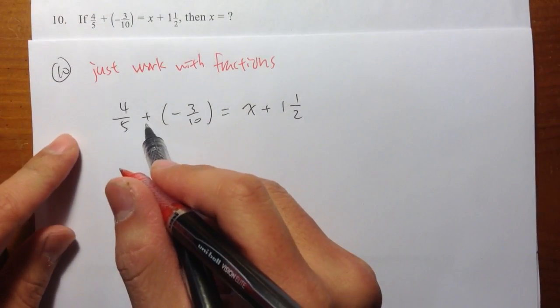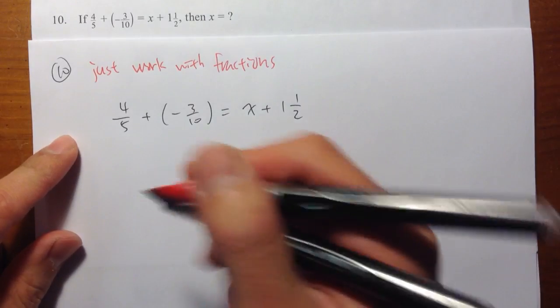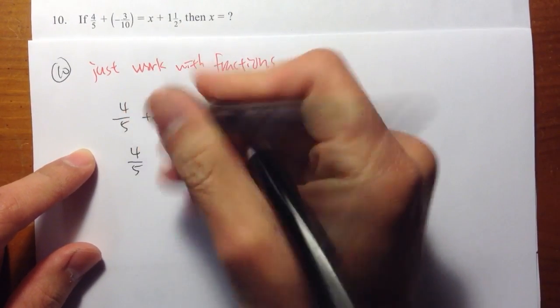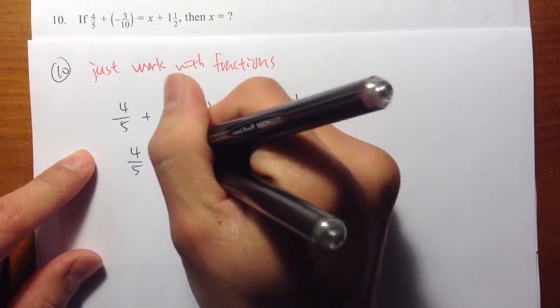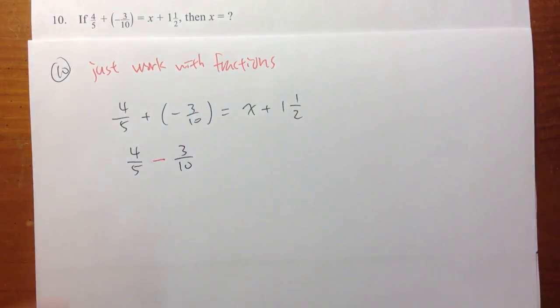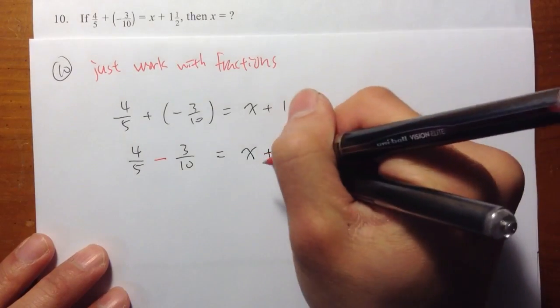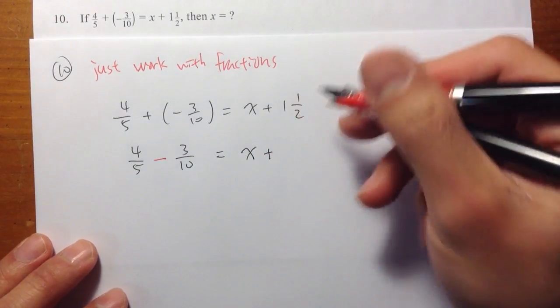First, positive times a negative becomes a negative. So on the left-hand side, I have 4 over 5 minus 3 over 10. And that's equal to x plus, and let me change this mixed number.